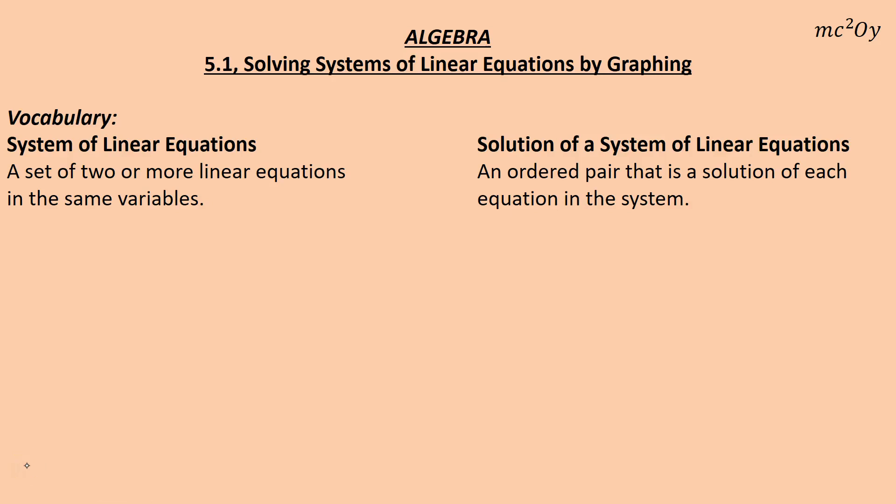5.1, solving systems of linear equations by graphing. First, we need to know what a system of linear equations is. A system of two, or a set of two or more linear equations in the same variable is called a system. So anytime you have two or more equations, that's a system. And if it's linear, if both equations are linear, then it's a system of linear equations.